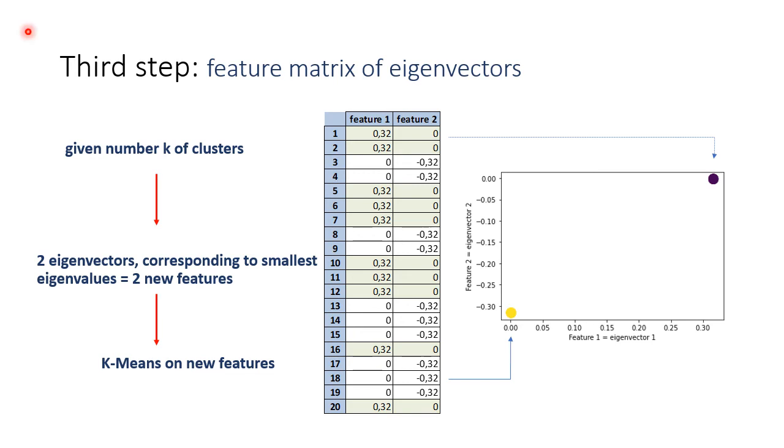In our example, we know that there should be two clusters. Two eigenvectors, the first one and the second one, which correspond to the smallest eigenvalues, are binded in a new matrix with 20 data points and two features. For instance, the first data point now is represented by two values, 0.32 and 0. Rows highlighted with green belong to the first cluster, others to the second one.